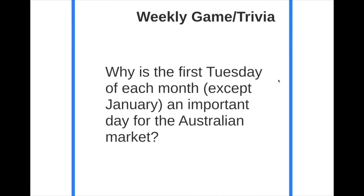This is the weekly Gamma Trivia. The question is: why is the first Tuesday of each month, except January, an important day for the Australian market? The lecture recording is done on Monday, so hopefully you are watching this on Tuesday — the first Tuesday of March. Why is that an important day for the Australian market? I don't have any present for you if you can answer the question, but you should be proud of yourself if you try to Google the answer. We'll have a short discussion next Monday.